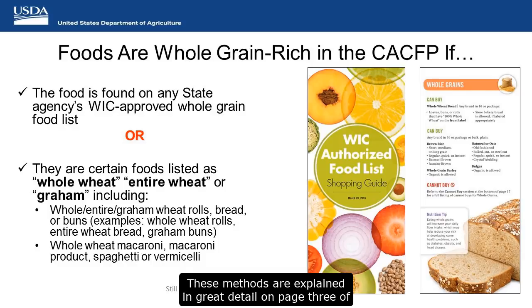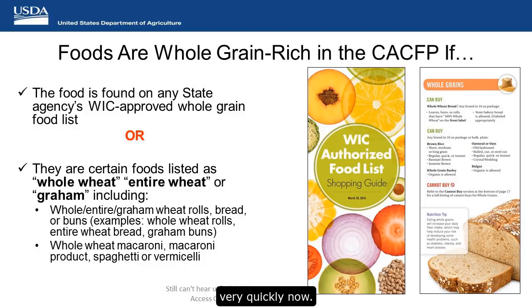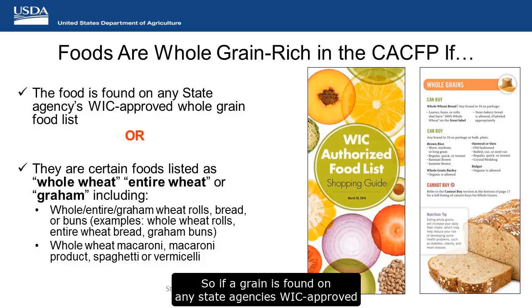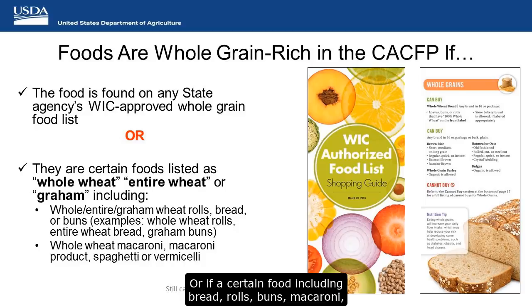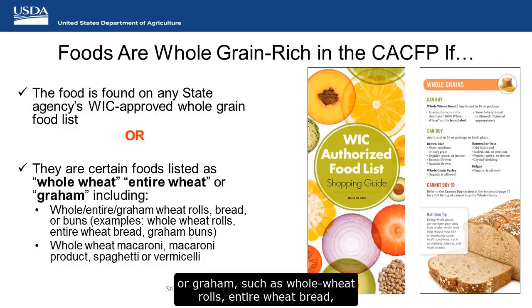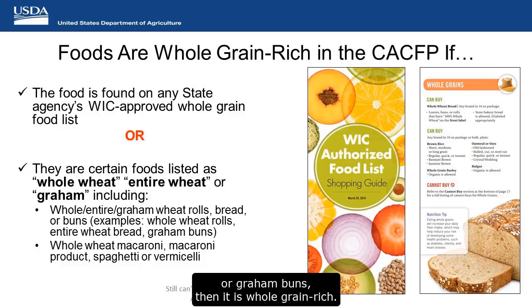These methods are explained in detail on page 3 of the handout. If the grain is found on any state agency's WIC approved whole grains list, or marked as a whole grain food on the WIC list, then it's whole grain rich. Or, if a certain food — including bread, rolls, buns, macaroni, spaghetti, or vermicelli — says whole wheat, entire wheat, or grams, such as whole wheat rolls, entire wheat bread, or gram buns, then it is whole grain rich.